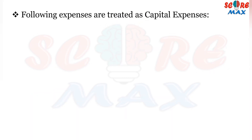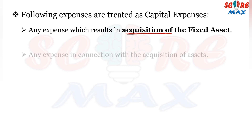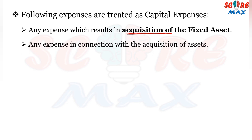Now we will talk about various expenses which are treated as capital expenses. The first is any expense which results in acquisition of a fixed asset — buying a fixed asset becomes our capital expenditure. The next is any expense in connection with the acquisition, such as installation expenses, which will also become our capital expenditure.